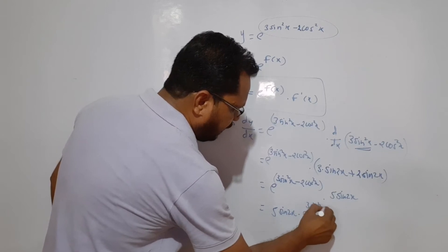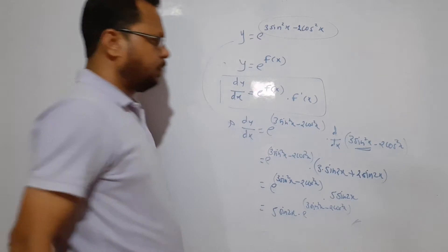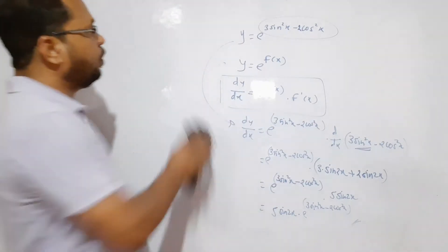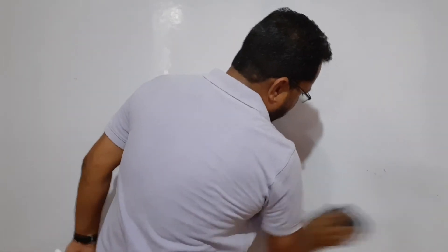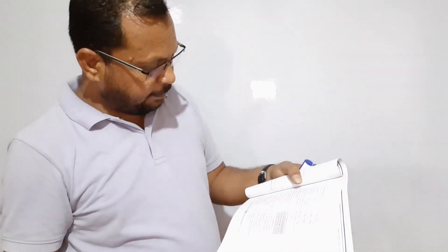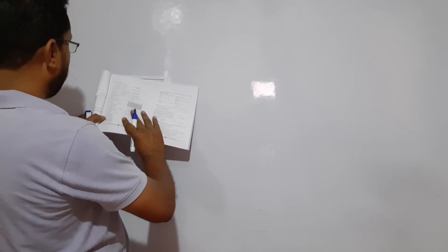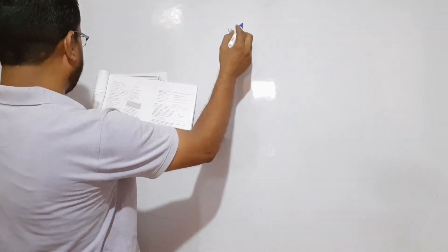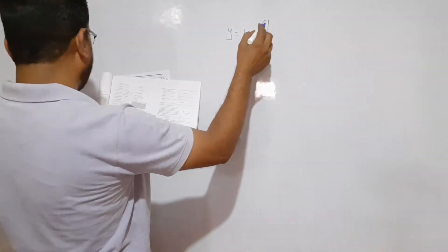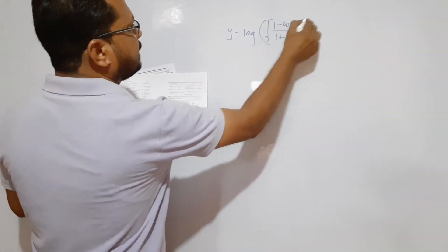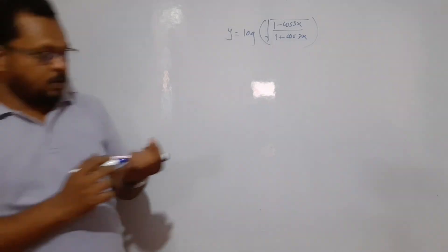This is your final answer for this example. Now let us take example number 13 from the book, question 3: y = log√((1 - cos3x)/(1 + cos3x)). See, it is in the form y = log(f(x)), so some trigonometric transformation is needed before differentiating directly.